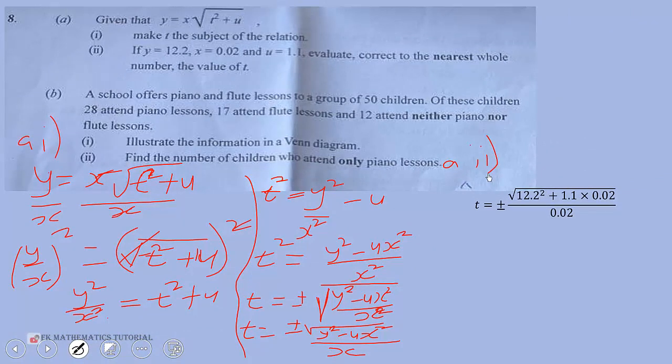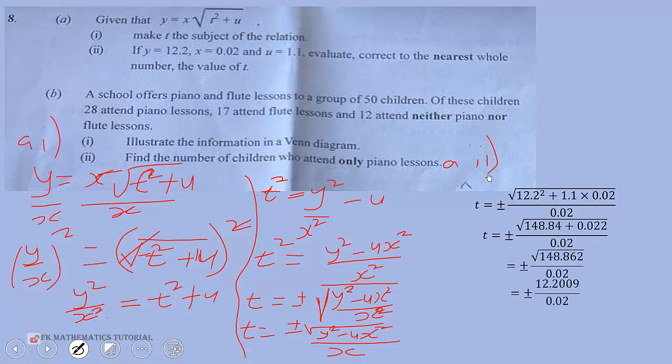We are substituting the values y equal to 12.2, x equal to 0.02, and u equal to 1.1. We substitute and simplify, as you can see. That will give us plus or minus 610 to the nearest whole number. That is what we are asked to do.